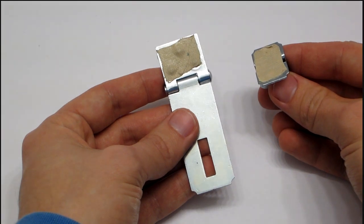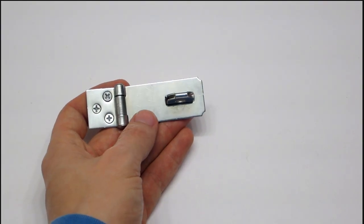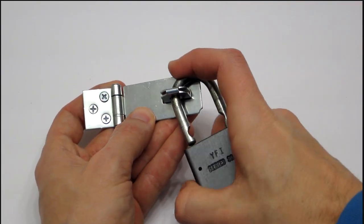Apply double sided tape to the back side of the hasp. And finally, attach the padlock and hasp to make your stuff look more secure.